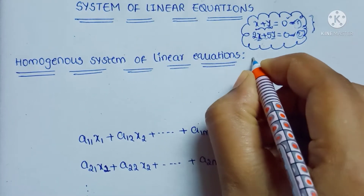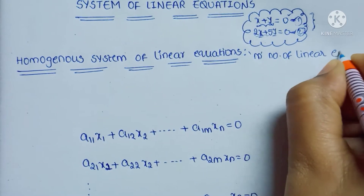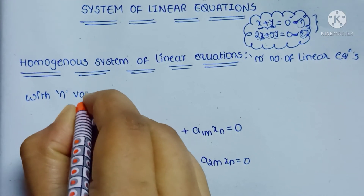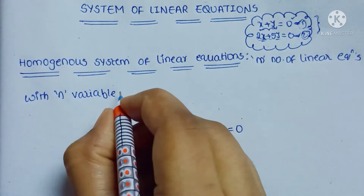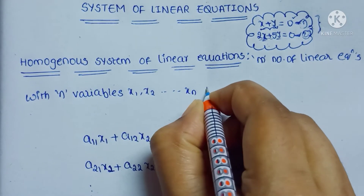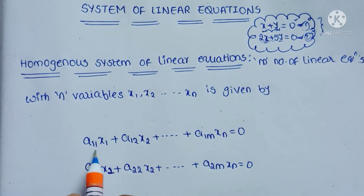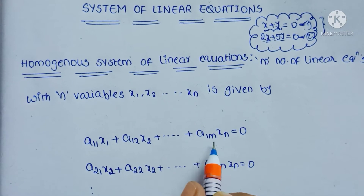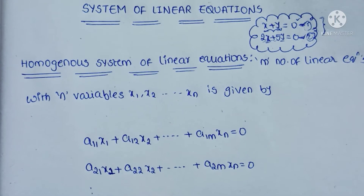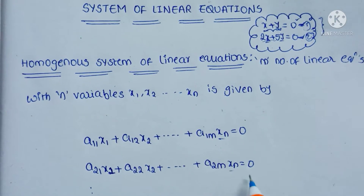If we have M number of linear equations with n variables — x1, x2, and so on up to xn — the general form is written as: a11·x1 plus a12·x2 plus and so on a1n·xn equal to zero, and similarly for the second through Mth linear equations.